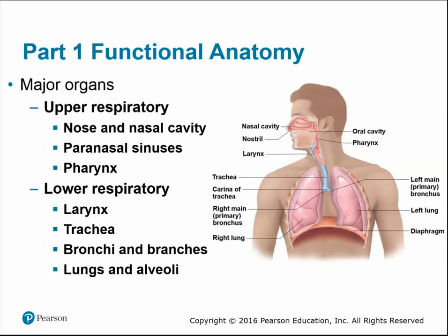Looking at the functional anatomy of the respiratory system, we can break it into two major regions. The upper respiratory tract includes the nose and nasal cavity, the paranasal sinuses, and the pharynx or throat. The lower respiratory system includes the larynx, trachea, bronchi, and of course the lungs and the alveoli air sacs.